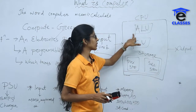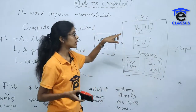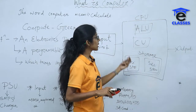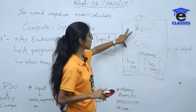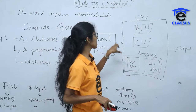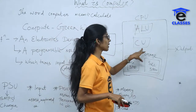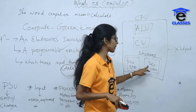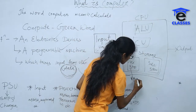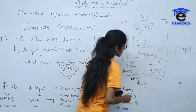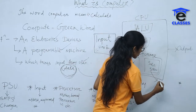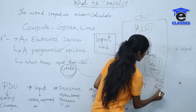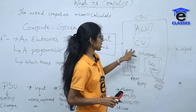The ALU — Arithmetic Logic Unit — performs arithmetic operations such as addition and multiplication. The CU — Control Unit — controls and helps in the process. Then the storage unit has primary storage, which includes RAM and ROM, and secondary storage, which includes SSD, pen drive, and other storage devices. Data is processed and given back to the user in information form.